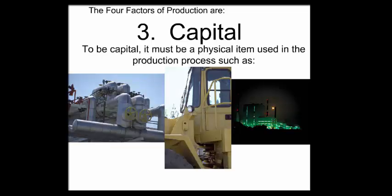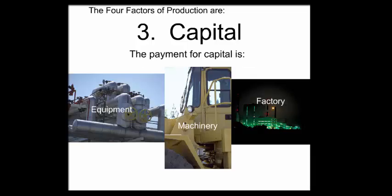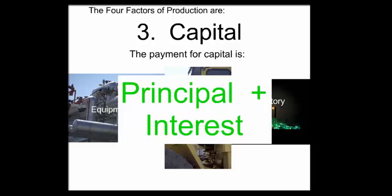The third factor of production is capital. When we look at capital, it must be a physical item used in the production process, such as equipment, machinery, factory, which produces things to go into the production process.